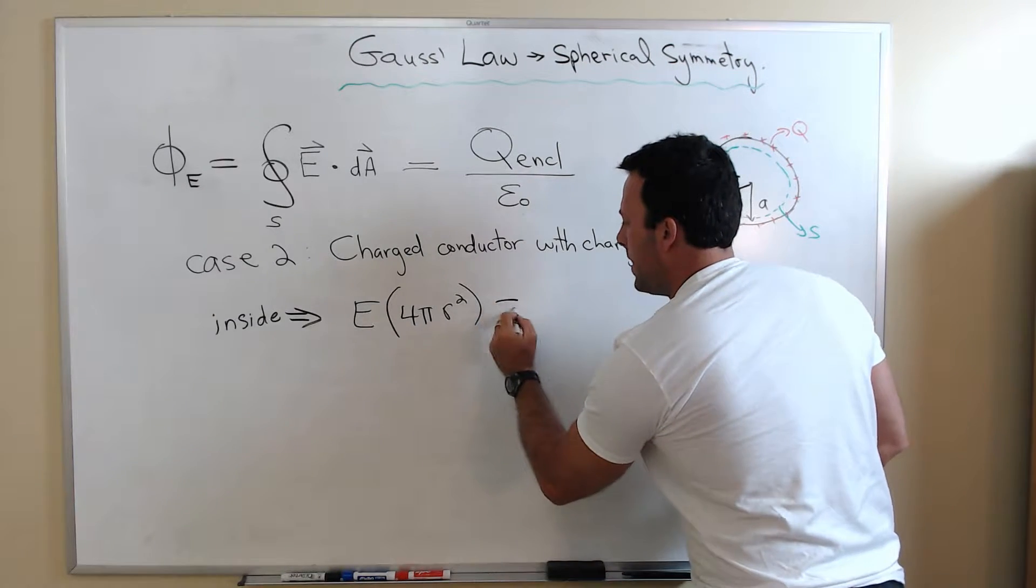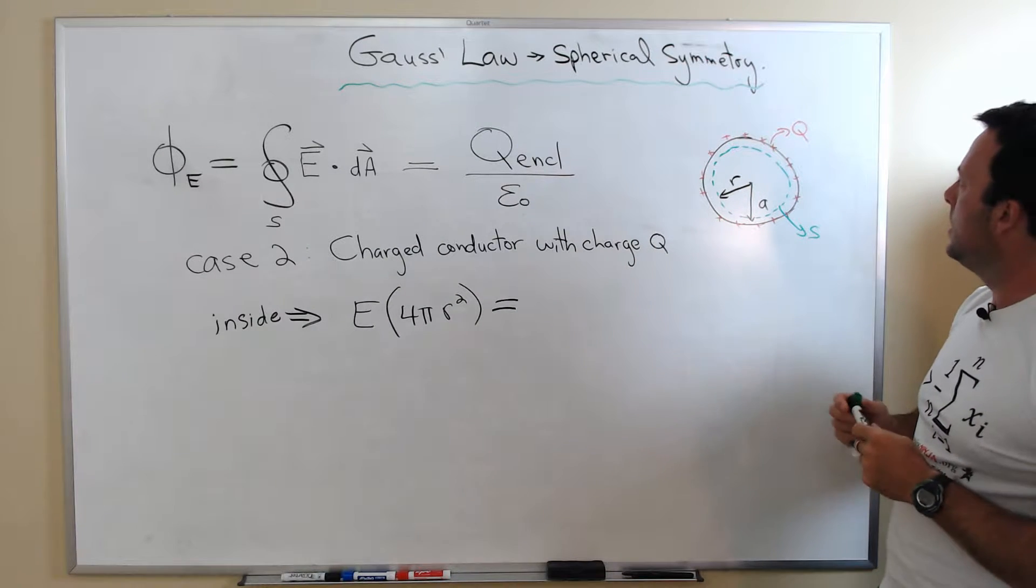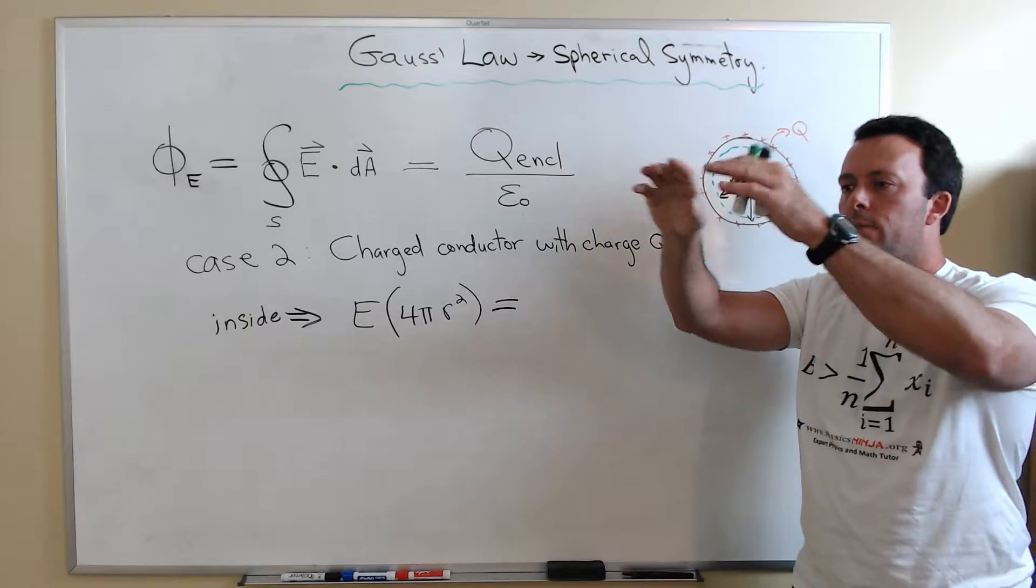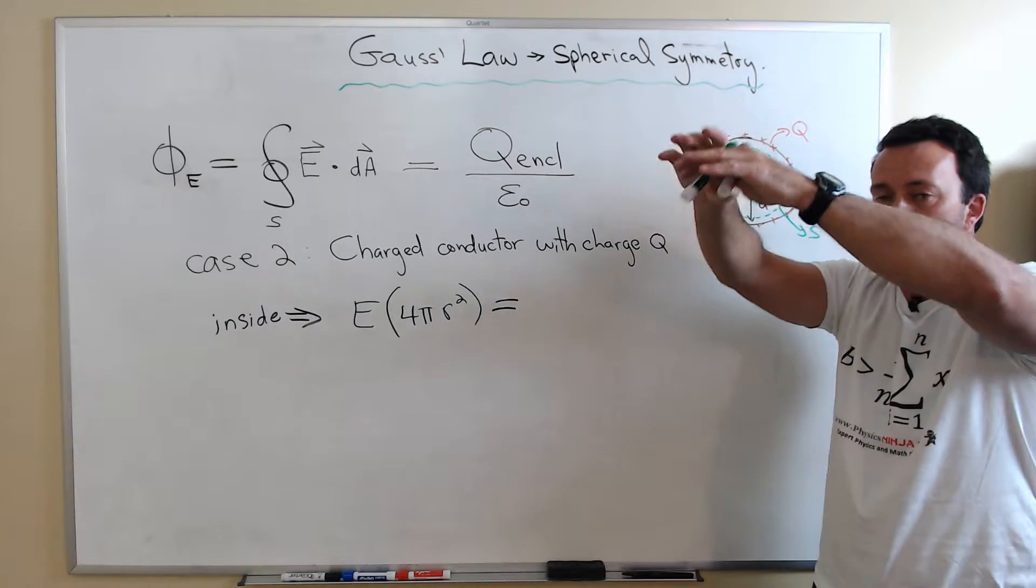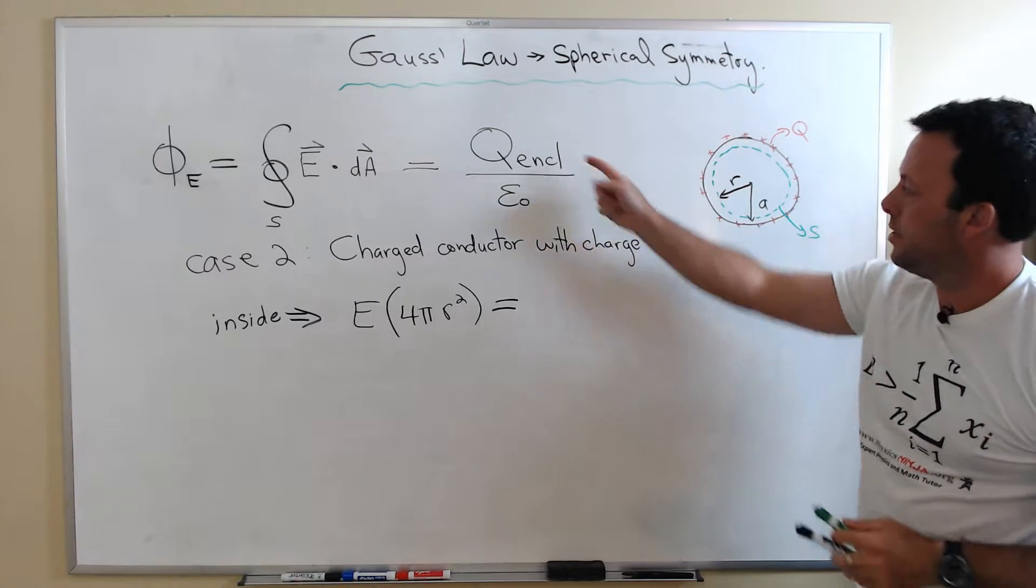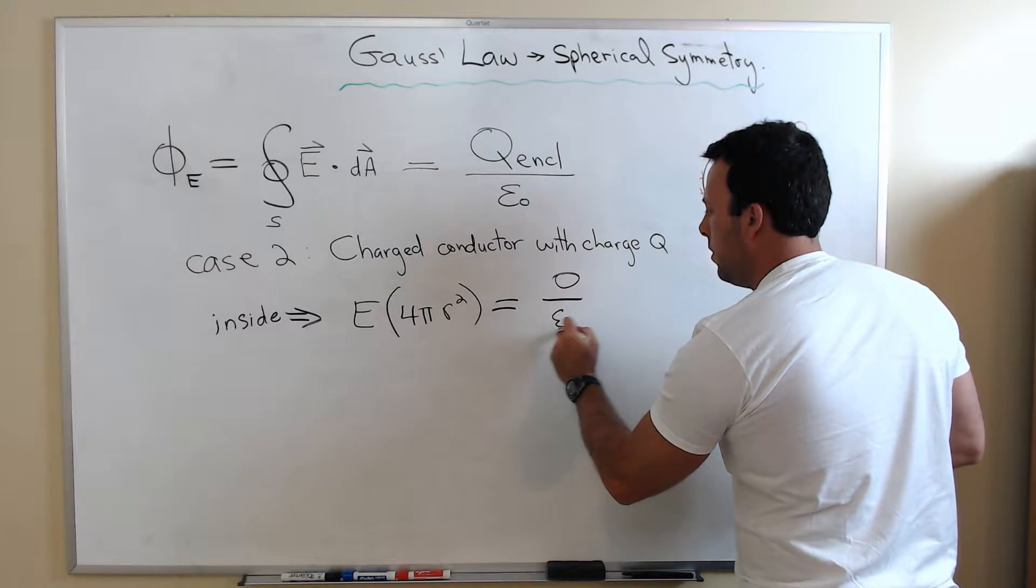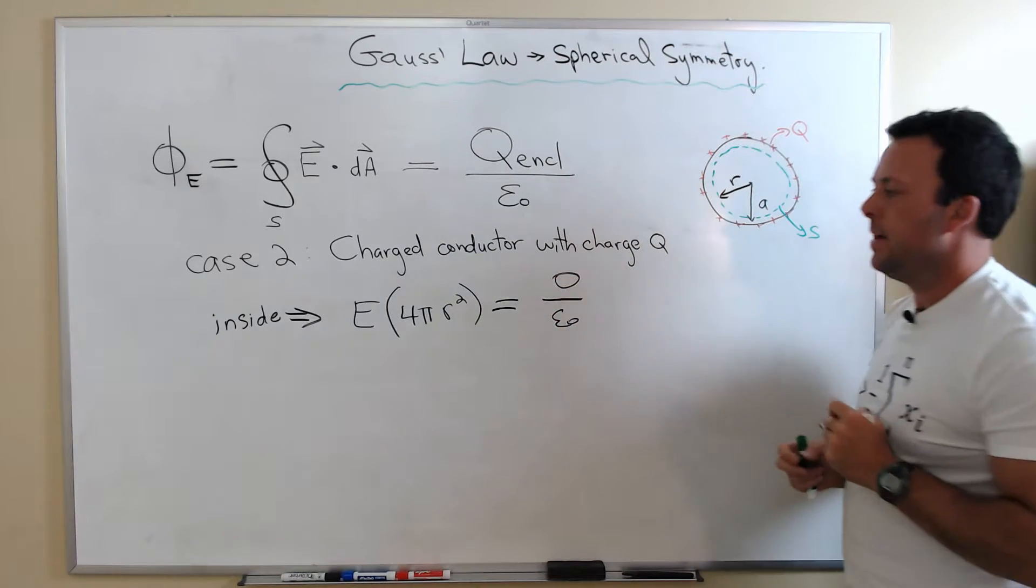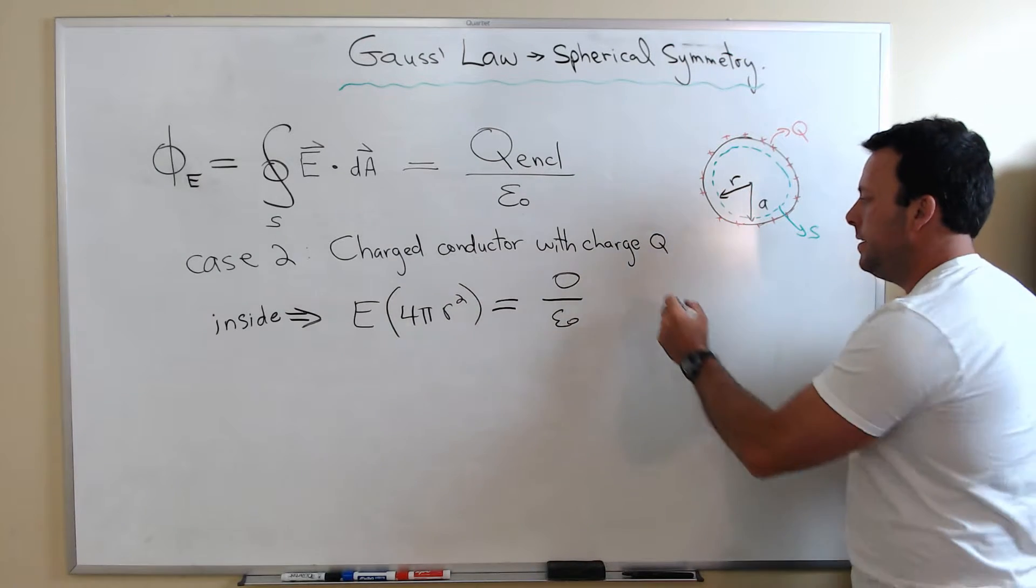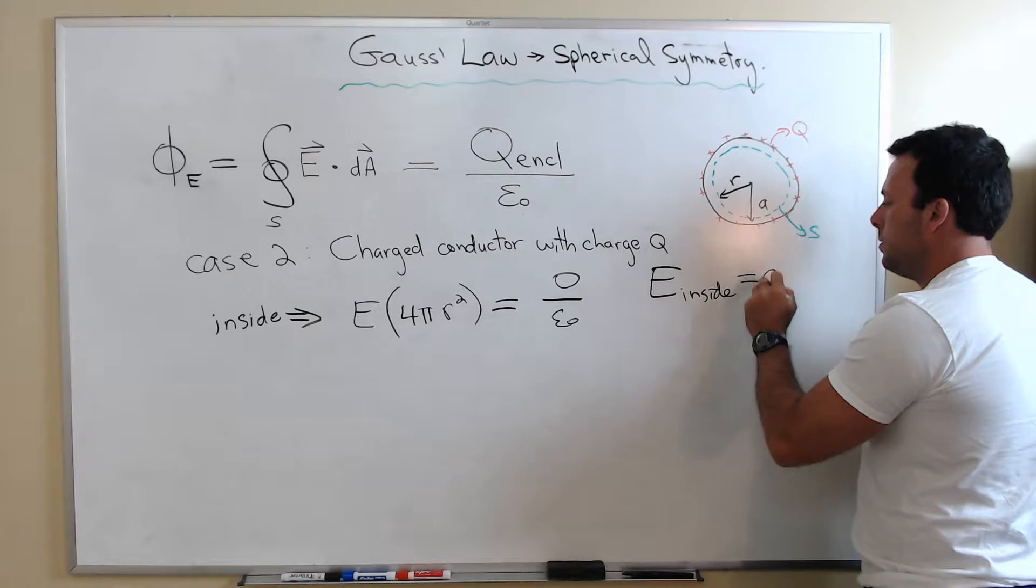And that has to be equal to the right-hand side of Gauss's Law. Well, how much charge is enclosed? Well, we just said if I put a charge Q on the conductor, it resides on this external surface, on the outside surface. So therefore, the charge that's enclosed is 0 over epsilon 0. So the only way you can have this equation satisfied is if the electric field inside the conductor is equal to 0.